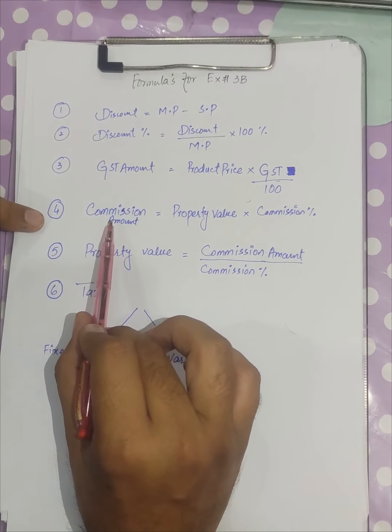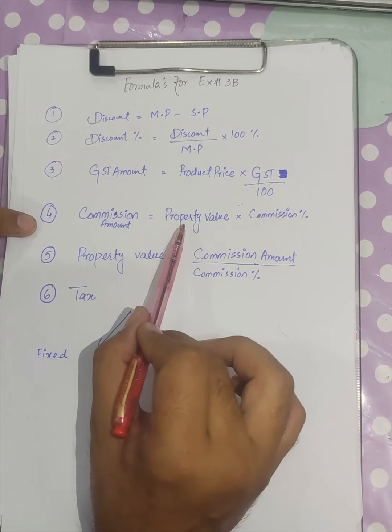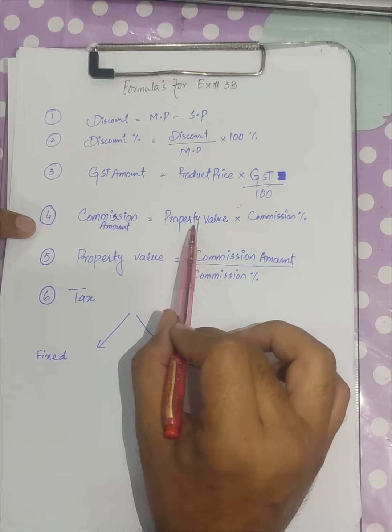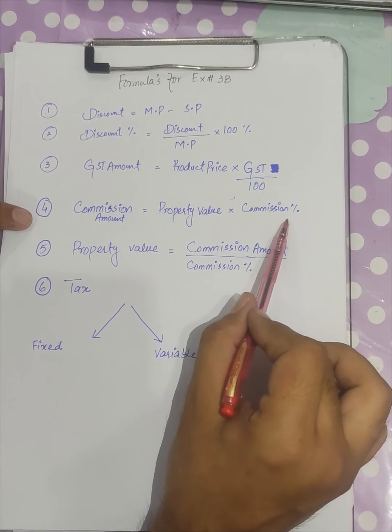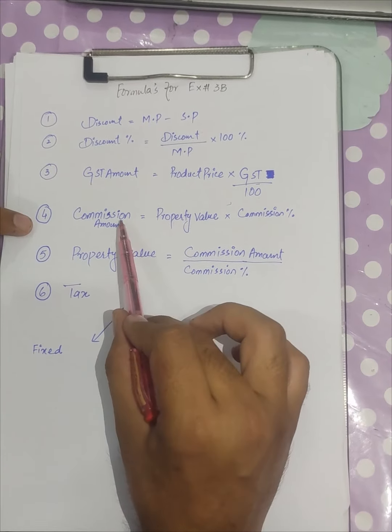And when we have to calculate the commission of any property, simply we will multiply property value by the commission percentage and divide it by 100. So we will get the commission amount.